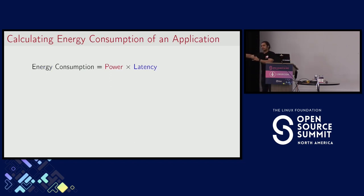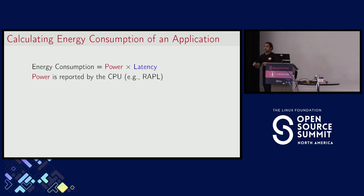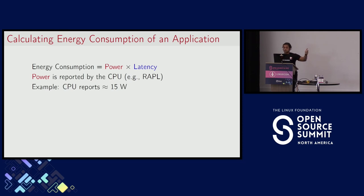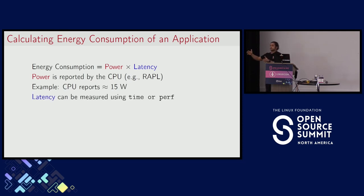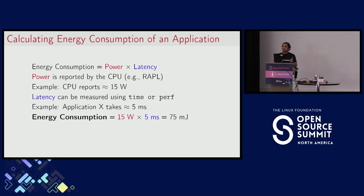Let's continue with our undergrad. He studied this formula: energy consumption equals power times latency. He can obtain power from the CPU via the RAPL interface, which tells him how much power the CPU is using. Let's say the CPU reports 15 watts. And he gets latency using the time command or perf — let's say a particular application takes 5 milliseconds to run. Energy equals power times latency: 75 millijoules. Is that the answer?